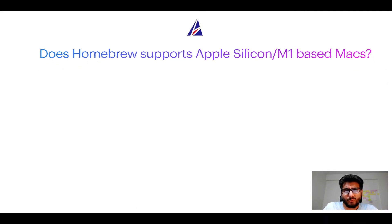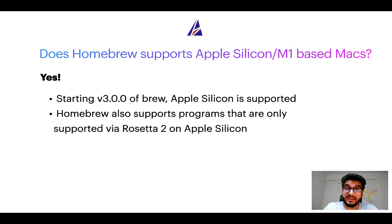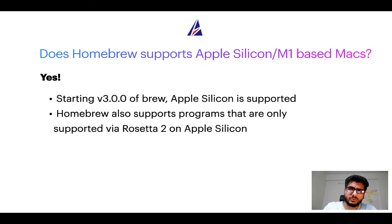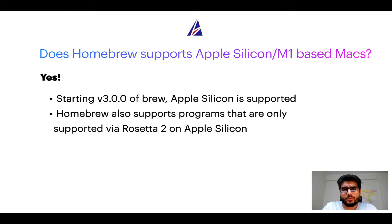Next question: can you use Homebrew to install programs on Apple Silicon, more popularly known as M1 MacBooks? Again, yes. Starting version 3.0 of Brew, Apple Silicon is now supported on Homebrew. In fact, Homebrew also supports programs that are at the moment only supported via Rosetta 2 on Apple Silicon. Now that I have answered your questions on safety and compatibility of Homebrew, let's get to the installation process.